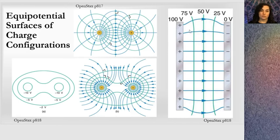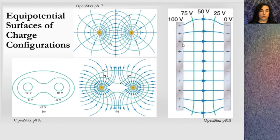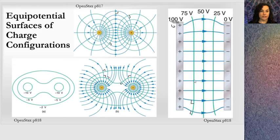Here we have a positive charge and a negative charge — the electric field lines are continuous from the positive charge to the negative charge, and all equipotential surfaces are perpendicular to those field lines. With this capacitor — two parallel plates — in the center we get a constant electric field. The potential is high near the positive charge at 100 volts, and as we move along the electric field lines the potential becomes smaller, reaching the lower potential at the negative charge. These are what the equipotential lines look like.